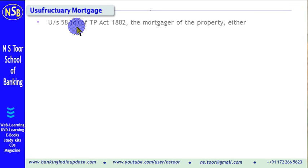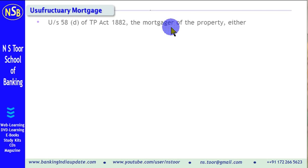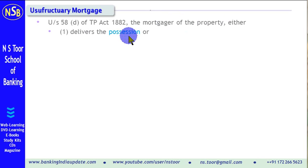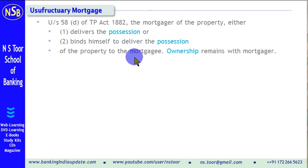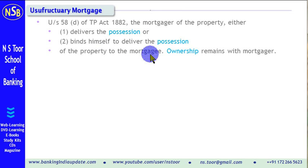Under Section 58D of the Transfer of Property Act, in case of Usufructuary Mortgage, the Mortgager of the property — Mortgager means the person who is the owner and who is creating the Mortgage — so the Mortgager either delivers the possession of the property or binds himself to deliver the possession of the property to the Mortgagee. Mortgagee means the person who is giving the loan. In case of a banking situation, when a home loan is given on Mortgage of the property, the borrower is Mortgager and the bank becomes Mortgagee.